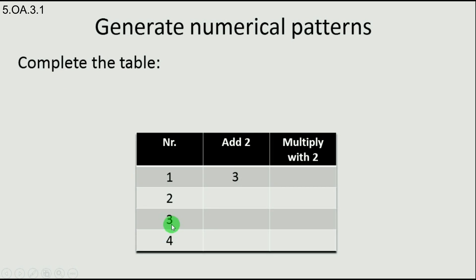Let's see how we can complete the table. On this column we have the first numbers: one, two, three, four, five, and six. On the second column, we have the numbers with two added. On the next column we have the numbers multiplied by two, that means the double of the numbers from the first column. So this is the table completed.